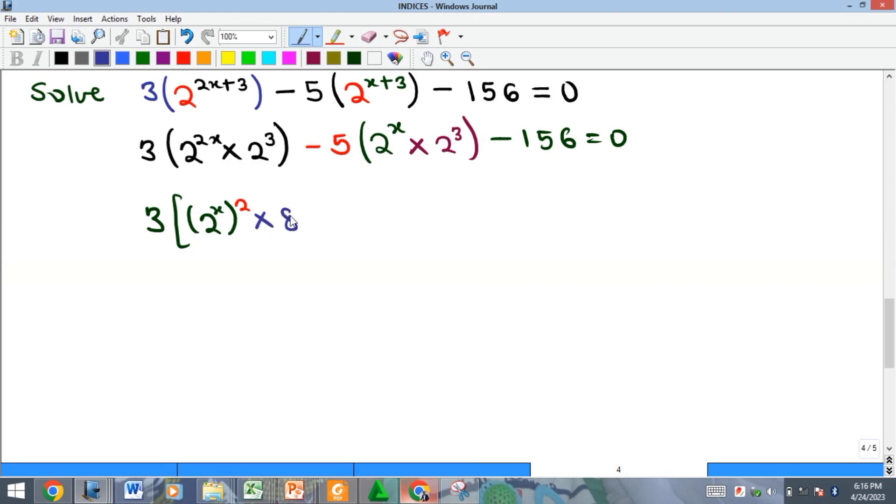This is multiplied by 8 because 2 raised to the power 3 is 8. We will close this bracket. Here we are going to have 5, so at this point we are going to be bringing out the constant and we'll be replacing our 2 raised to the power x.